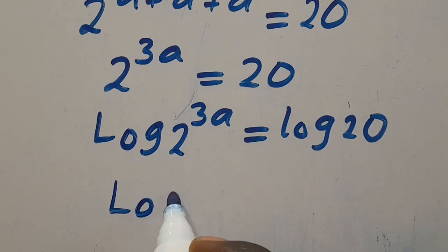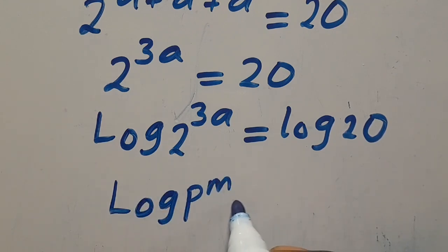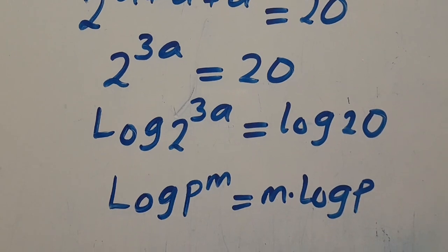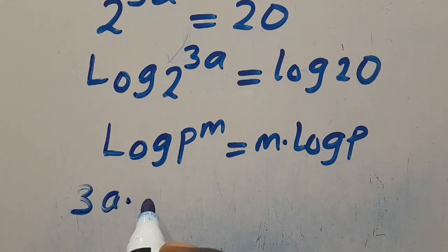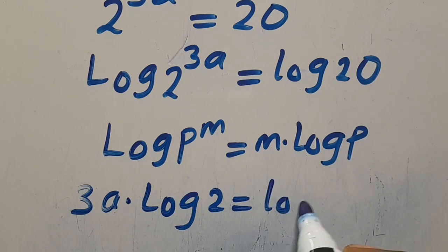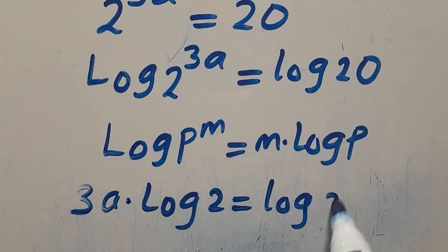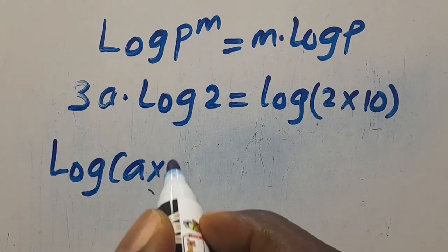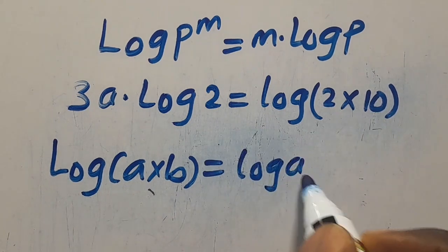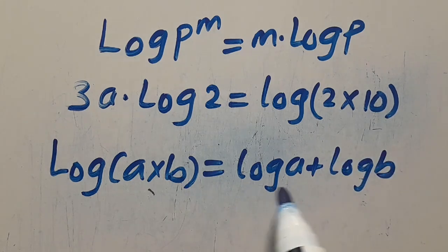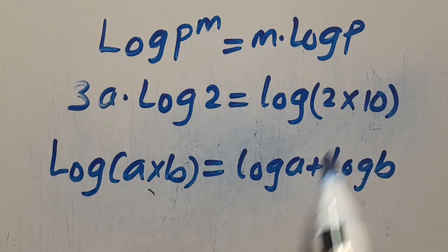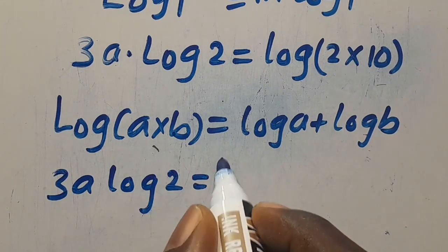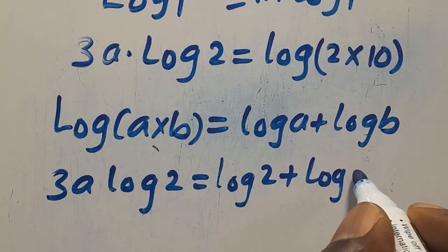Recall that when you have log P to the power of M, this power M comes down as M multiplied by log P. So this power 3A comes down, giving us 3A multiplied by log 2 equals log 20. Let's write 20 as 2 times 10. Then recall that log of A times B equals log A plus log B, so multiplication changes to addition. Applying it here: 3A multiplied by log 2 equals log 2 plus log 10.